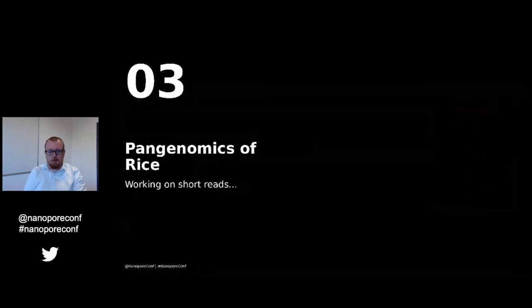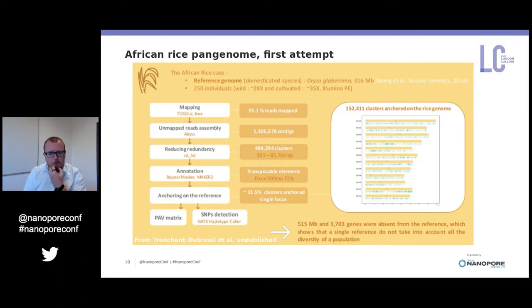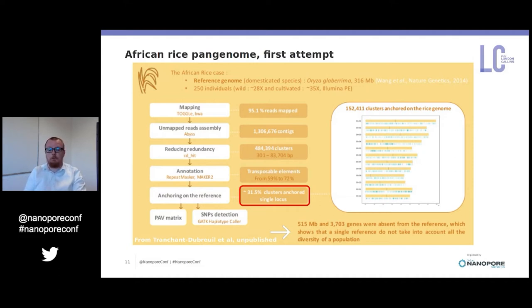We decided to build a pan genome for rice. With short reads, we use an approach we are developing in a tool called Frangipane: we map reads to the reference genome, extract unmapped reads, reassemble those short reads into contigs, then anchor them back to the reference. The main problem is that with short reads we get short contigs, and we can anchor only about 31.5 percent of those sequences into clusters.